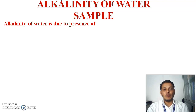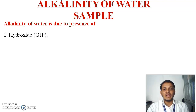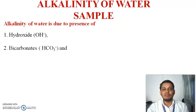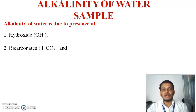Alkalinity of water is mainly due to the presence of hydroxide, carbonate, and bicarbonate salts. Examples of hydroxide salts are sodium hydroxide, potassium hydroxide, and calcium hydroxide. Examples of bicarbonate salts include calcium bicarbonate, sodium bicarbonate, and magnesium bicarbonate.